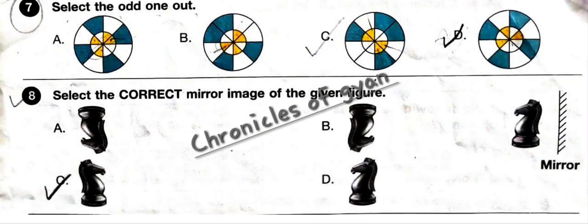Question 7: Select the odd one out. Looking at the figures, options A, B, and C each have four triangles colored yellow underneath, but option D is different. So option D is the odd one out.